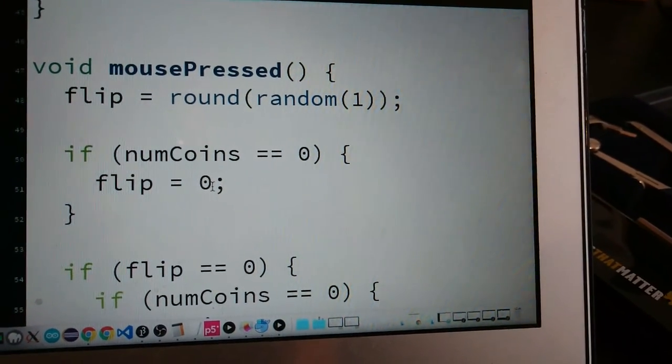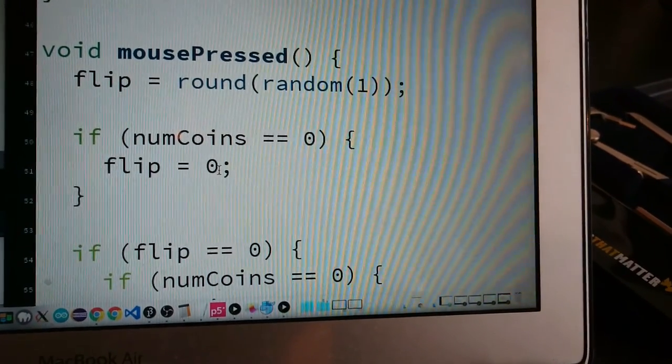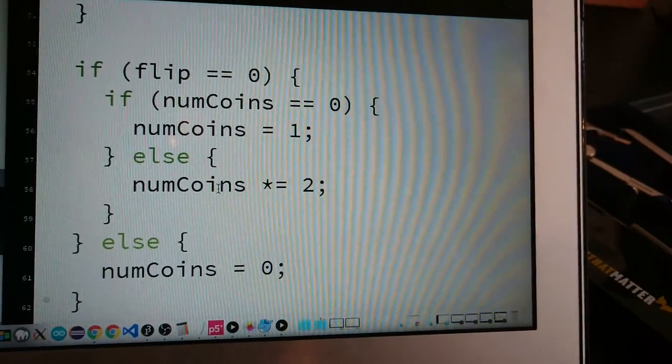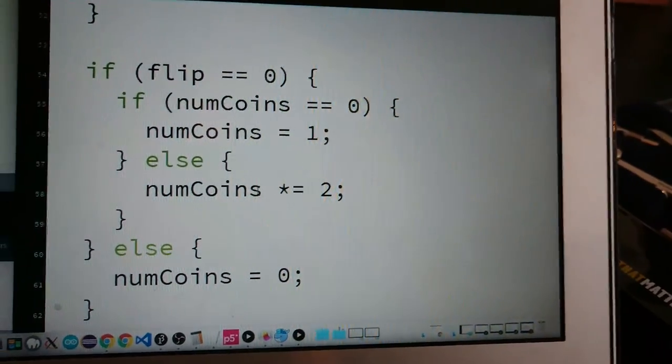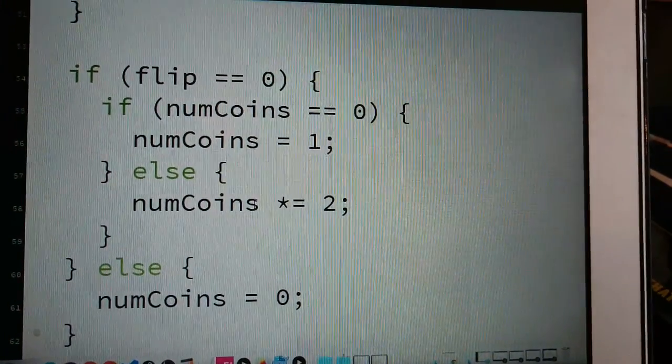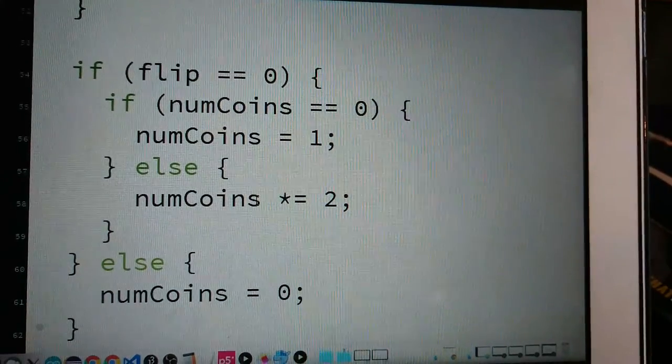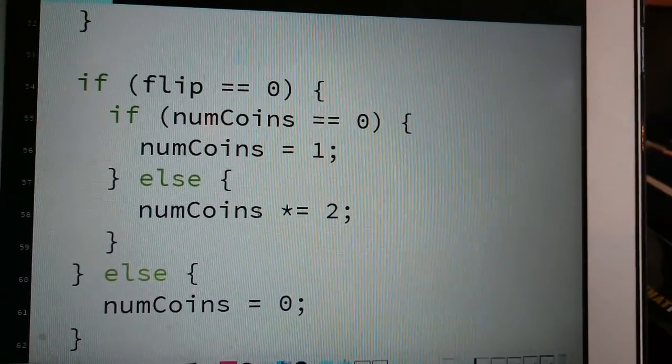So I just see if I get a tails, I must get a heads afterwards. So I guess we're going back. And if the flip is zero, then if the number of coins is zero, then I'm just setting it to one, so I'm restarting the game.